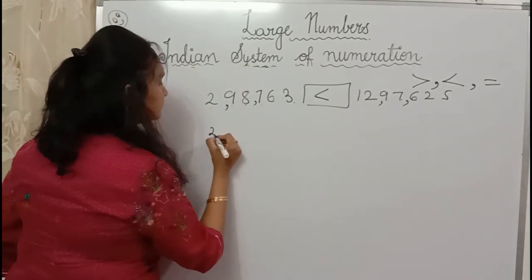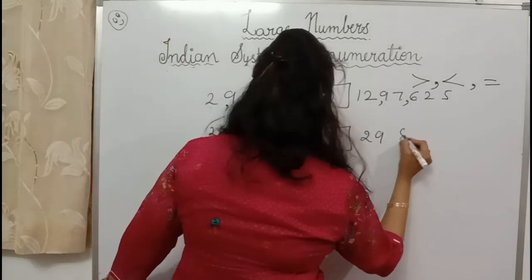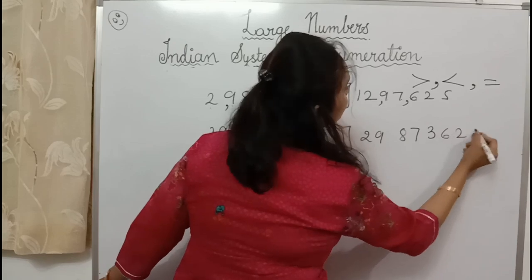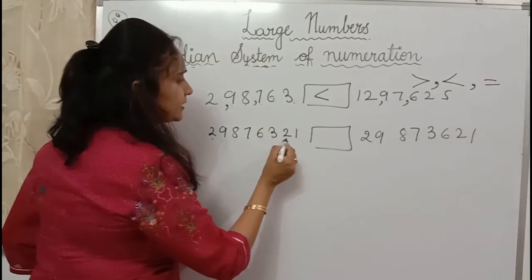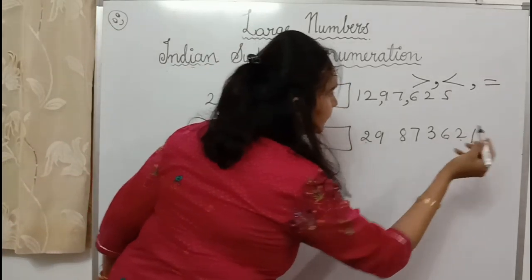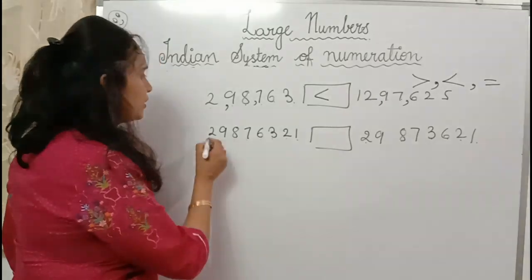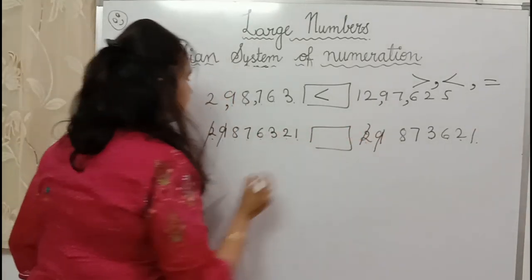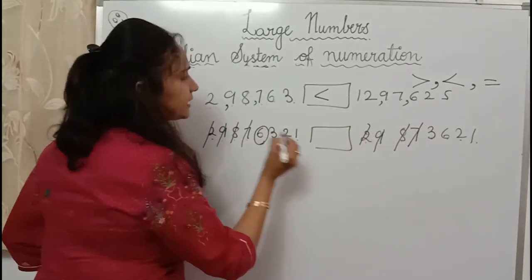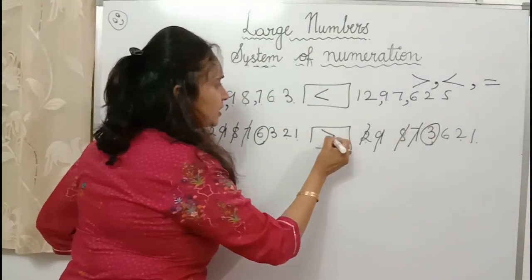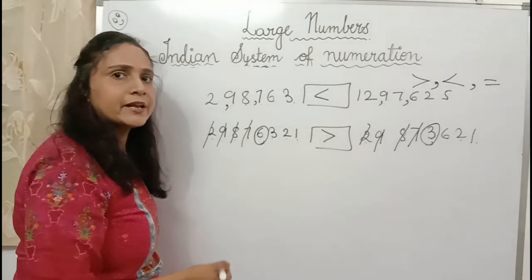But if two numbers have the same number of digits, then we compare from the first digit — the biggest place value. For example, comparing 2,98,7362,1 and 2,98,7321: first digit 2 = 2, second digit 9 = 9, third digit 8 = 8, fourth digit 7 = 7. Now fifth digit: 6 and 3. Six is bigger, so the first number is greater. We always start from the bigger place value and keep comparing.